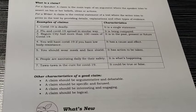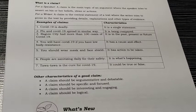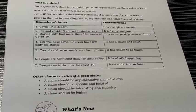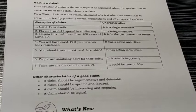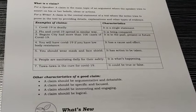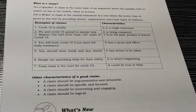Number 7: 'Tawa-tawa is the cure for COVID-19.' This could be true or false — it is not yet scientifically proven.